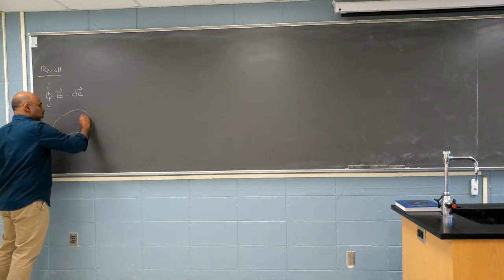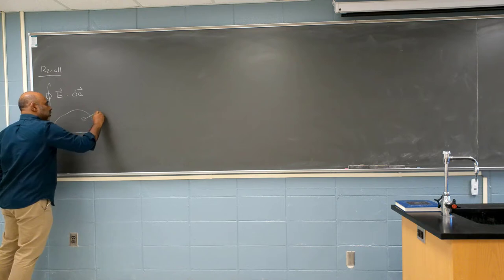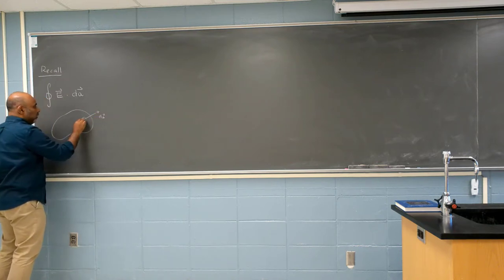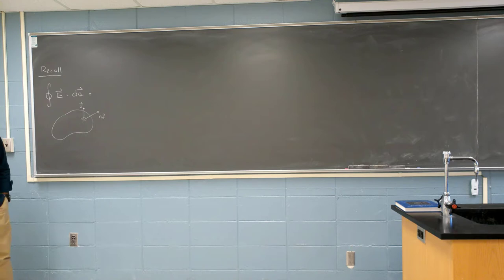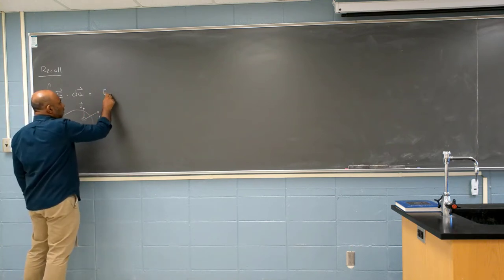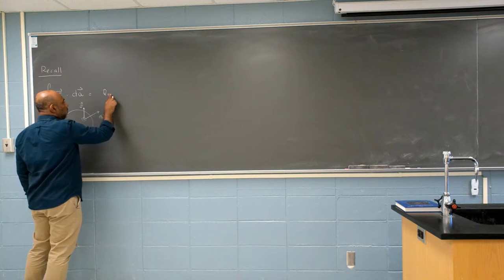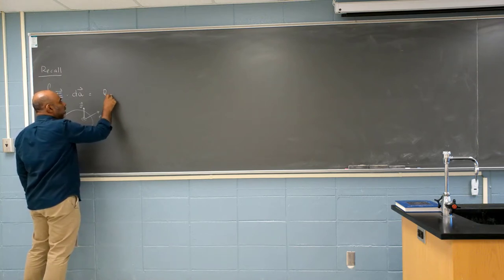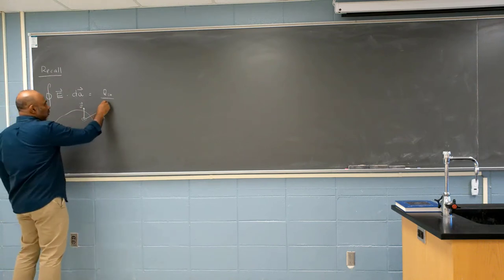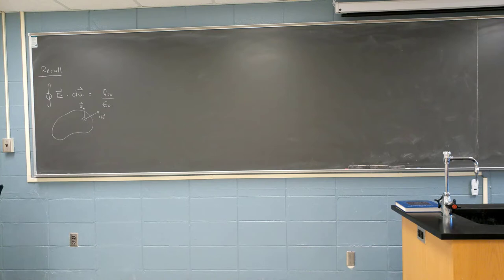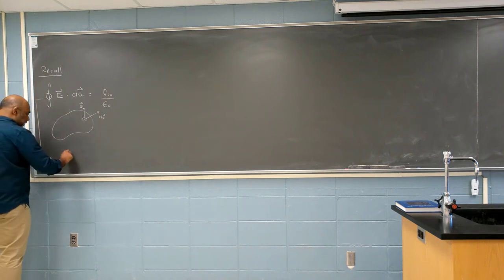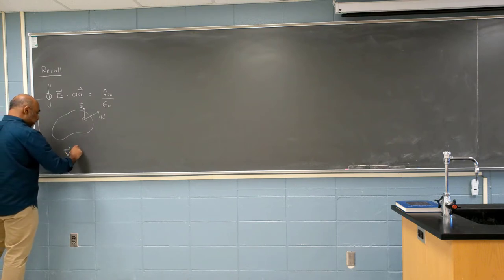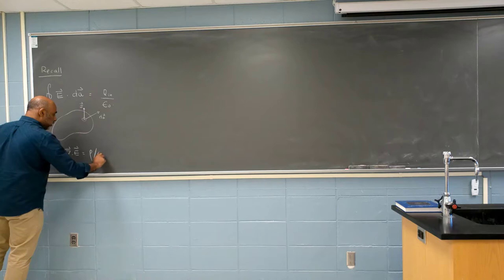At any point you have a dA and some electric field E. This is completely determined by Q enclosed. This very quickly translates using the divergence theorem to the fact that divergence of E equals rho over epsilon naught.